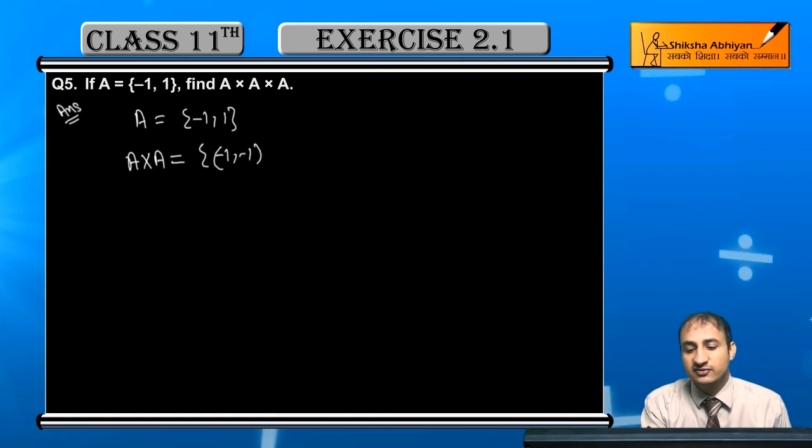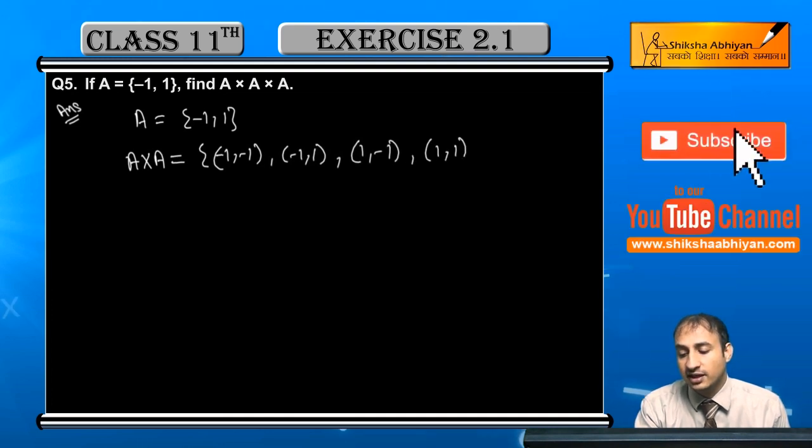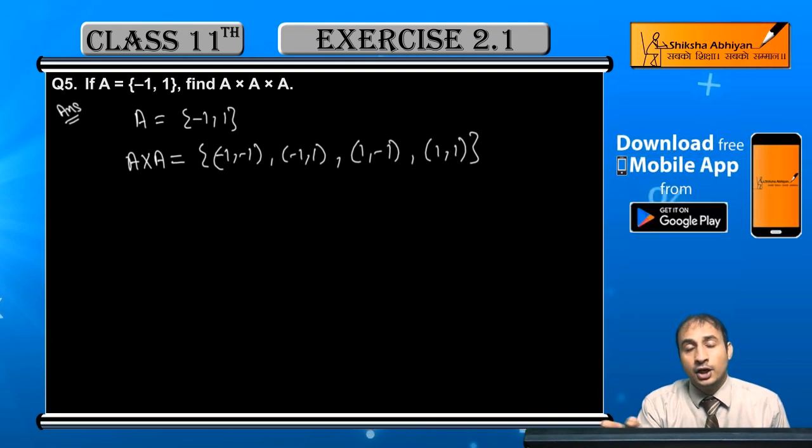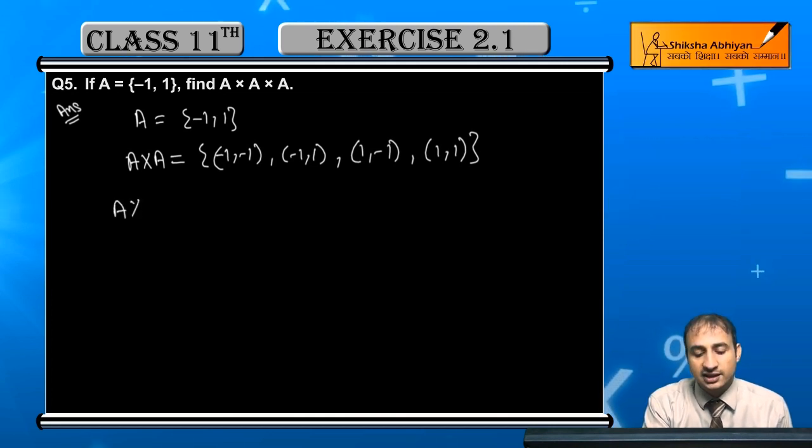First element of first element, then first element of second element pairing. Now second element of first pairing and second element of second pairing. Here is A cross A. Now to find the triplet, multiply this with A. A cross A ka product A ke saath me, so this will be A cross this A.